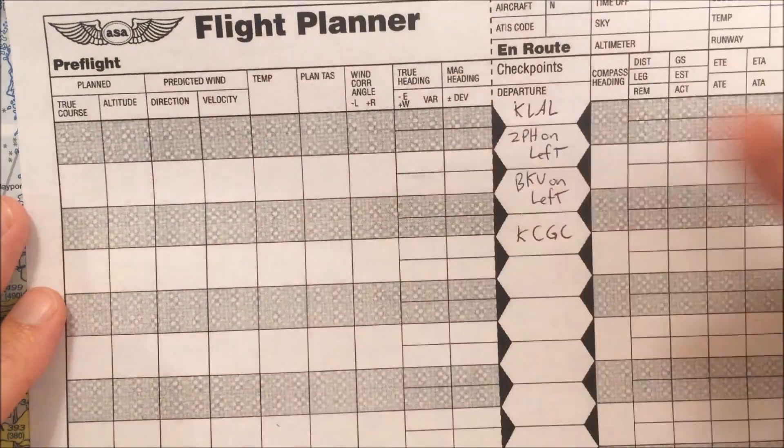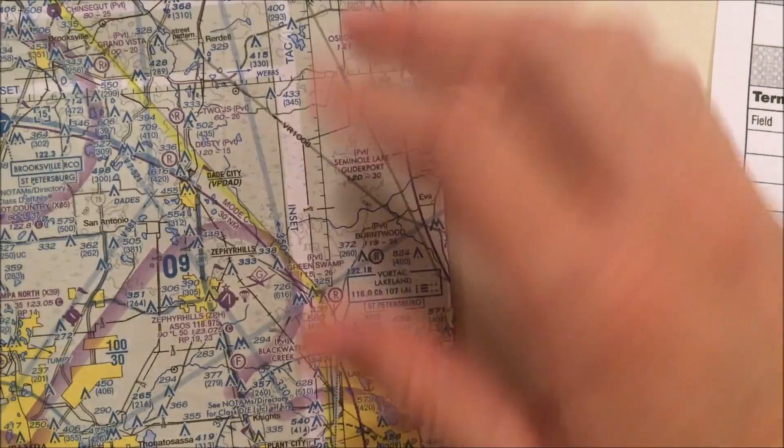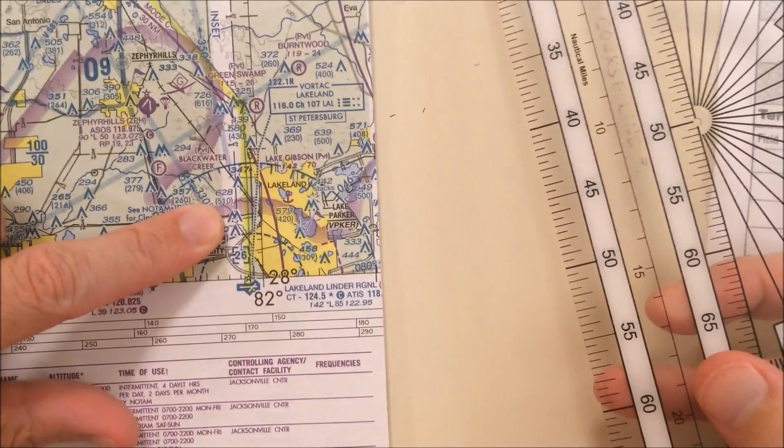Number two, now I need the true course, the course as measured on the sectional between each of these waypoints. So to do this, you need to get out your plotter, and you need to line it up with the course line that you drew on the chart.